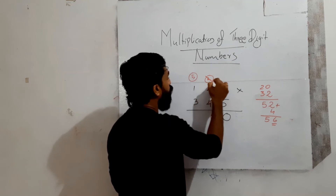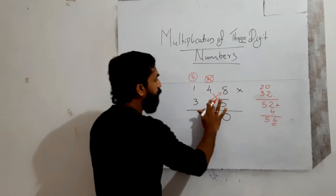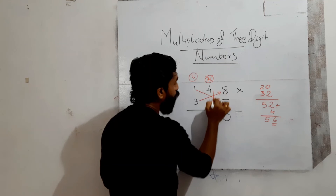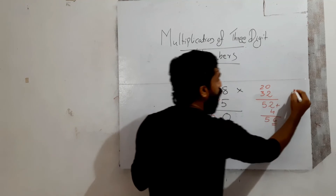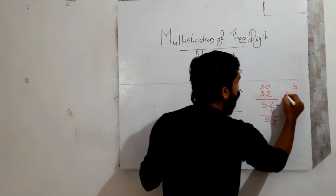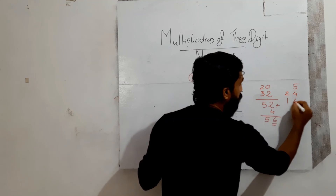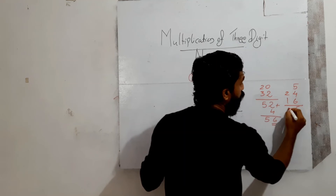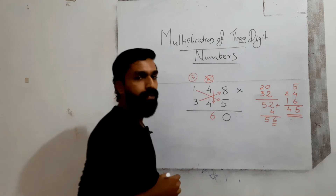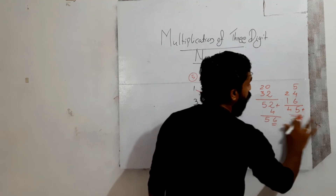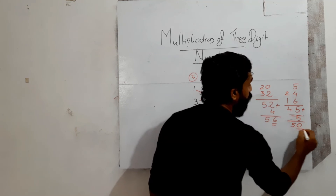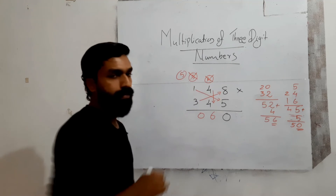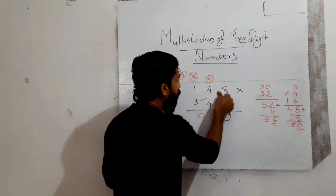Next cross multiplication with three terms: 1 into 5 is 5, 3 into 8 is 24, and 4 into 4 is 16. Add: 5 plus 24 plus 16 equals 45. Add the carry of 5: 45 plus 5 equals 50. Write 0, carry over 5.